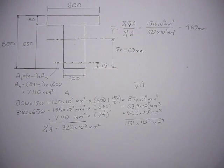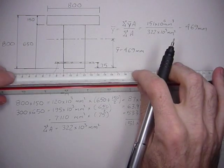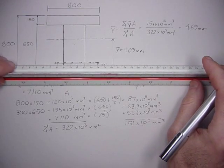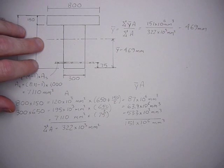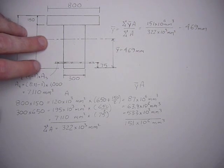Now we can find out the inertia. We'll take the inertias about the base of the section and then use parallel axis theorem to bring it up to the centroid here at 469.